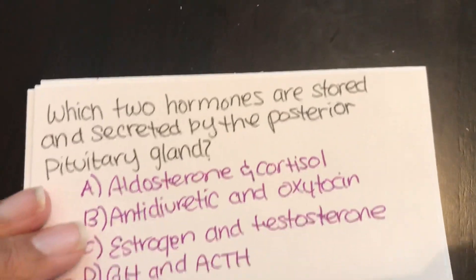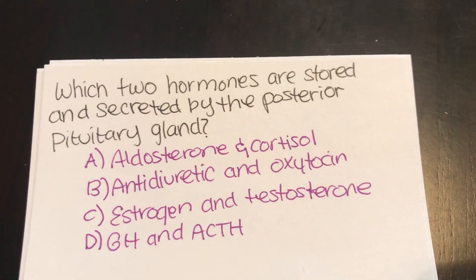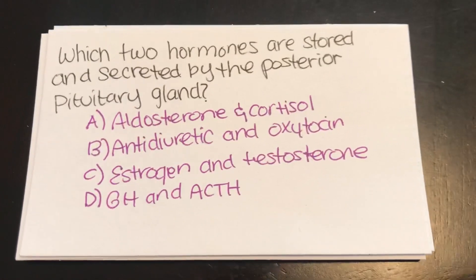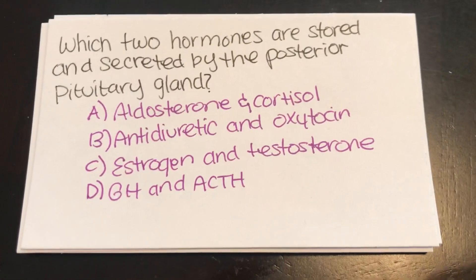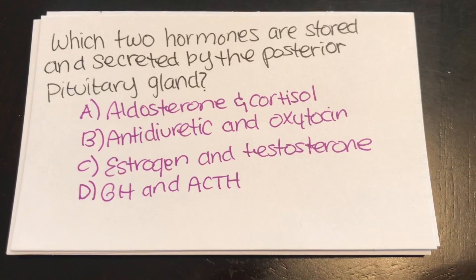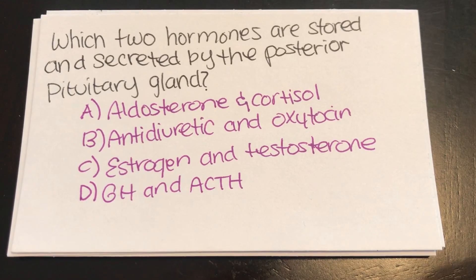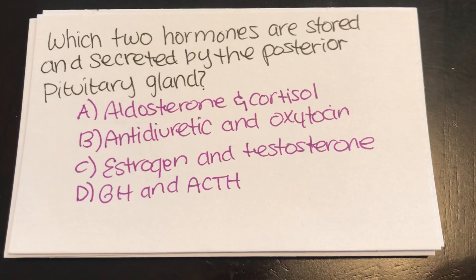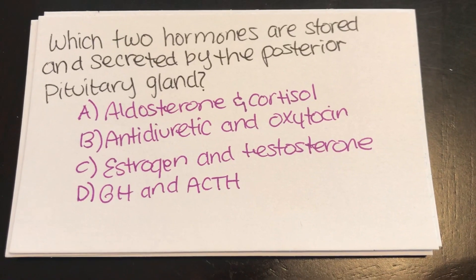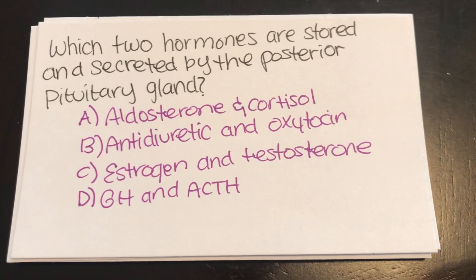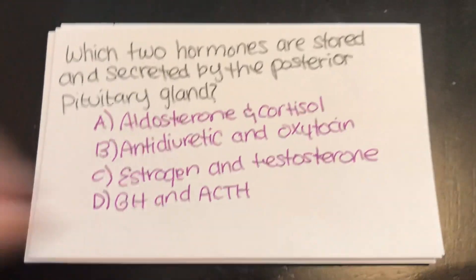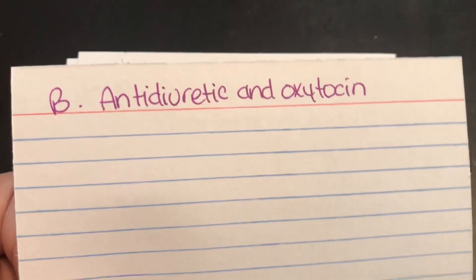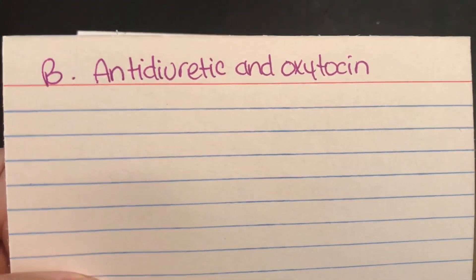Which two hormones are stored and secreted by the posterior pituitary gland? A, aldosterone and cortisol. B, antidiuretic and oxytocin. C, estrogen and testosterone. Or D, growth hormone and ACTH. Answer: B, antidiuretic and oxytocin.